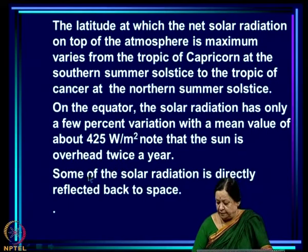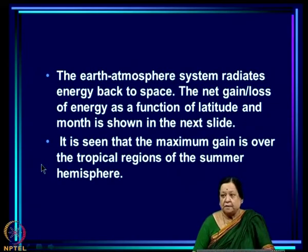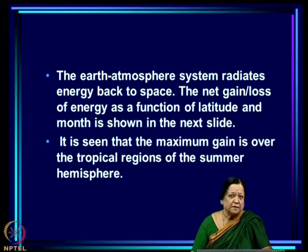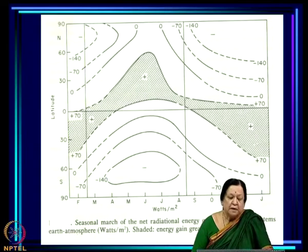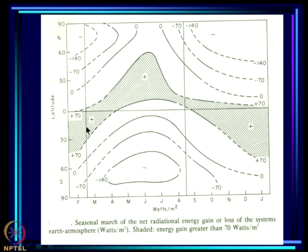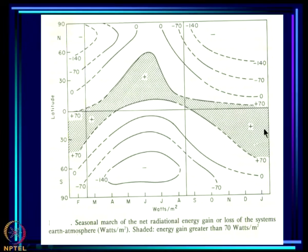Some of the solar radiation is directly reflected back to space. The earth-atmosphere system receives radiation from the sun and in turn radiates energy back to space — equilibrium is maintained only because the earth-atmosphere system radiates energy back. The net gain or loss of energy as a function of latitude shows that the belt of maximum net gain moves from the southern hemisphere in our winter to the northern hemisphere in our summer, and retreats to the southern region in our winter again.